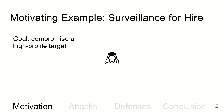The motivating example for this work is Spyware-for-Hire, with the goal of attacking a high-profile target. An unscrupulous organization wants to install Pegasus on the device of a high-profile target, like Jamal Khashoggi, in order to control the target's device.